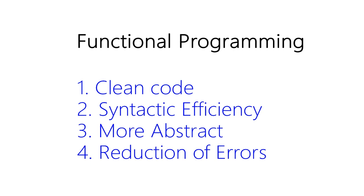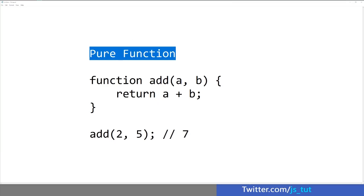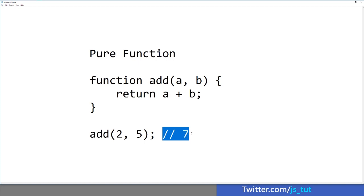When we talk about functional programming, the subject of the pure function comes up a lot. A pure function is a function that returns the same result provided the same parameters passed to it. For example, if you pass 2 and 5 to this add function, you'll always get 7.